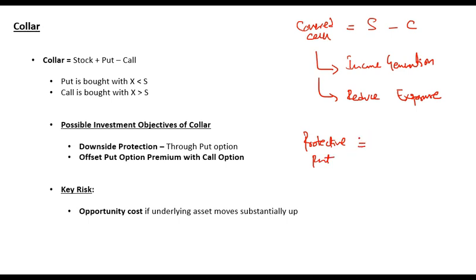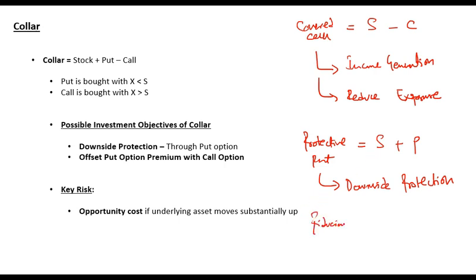What is a protective put? A protective put is stock plus a put option. The investment objective for a protective put is downside protection. In any case, if you only hold a stock you will still have maximum profit.